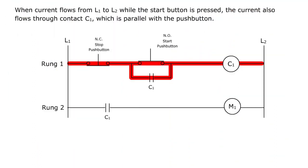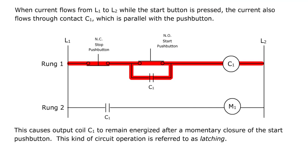When current flows from L1 to L2 while the start button is pressed, the current also flows through contact C1, which is parallel with the pushbutton. This causes output coil C1 to remain energized after a momentary closure of the start pushbutton. This kind of circuit operation is referred to as latching.